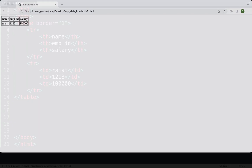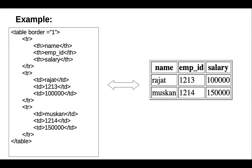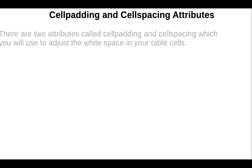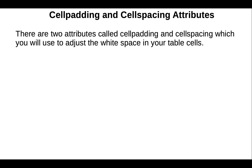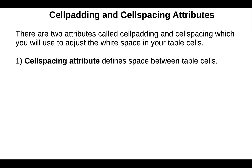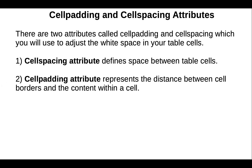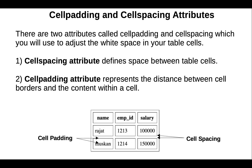Next are the cellpadding and cellspacing attributes. These two attributes are used to adjust the white space in your table cells. The cellspacing attribute defines the space between table cells, while the cellpadding attribute represents the distance between cell borders and the content within a cell. This diagram shows the meaning of both attributes.